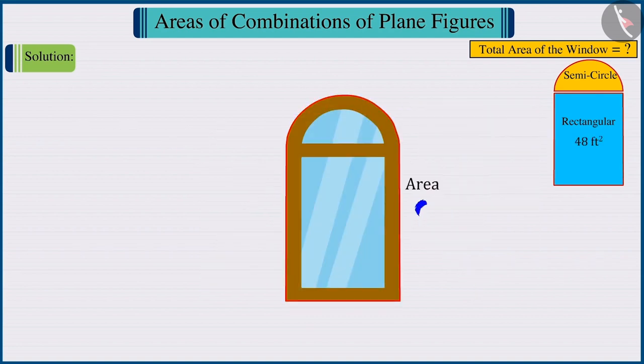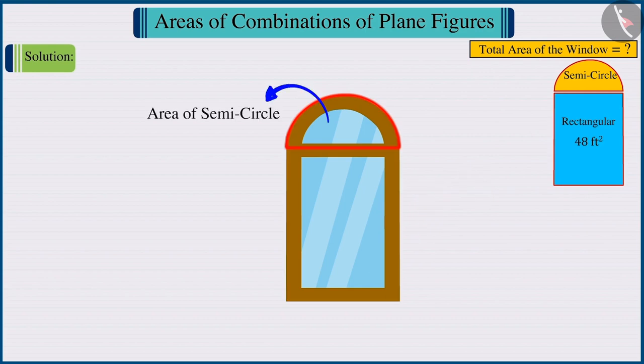Since we have to find the area of the whole window, we need to find the area of the upper portion, which is the semicircle. Can you tell what the area of the semicircle will be?